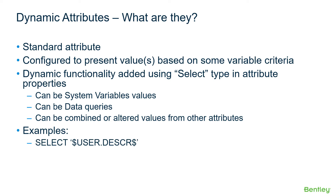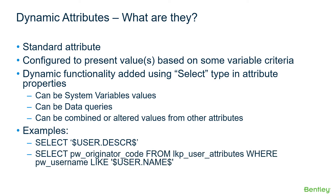Here are two examples of a Dynamic Attribute property selection. In the first example, we are using the select type to set an attribute to the user description system variable for the currently logged-in user, so the attribute value will dynamically change depending on who is logged in. The second example uses a SQL statement for the select option, dynamically setting the originator code attribute value by querying the ProjectWise user attribute lookup table, where the username column must match the current user logged into ProjectWise.